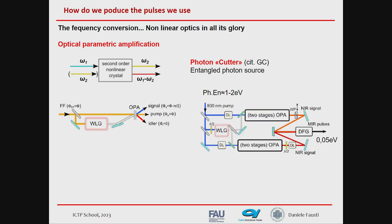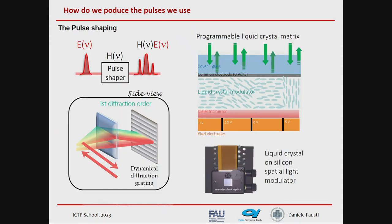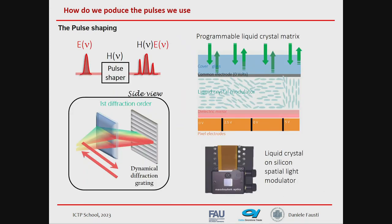Depending on what frequencies we want to produce, we need to design non-linear processes in cascades, going from one given starting frequency to produce all the desired spectral components. This is the conceptual design, and these are effectively real experiments in the lab, where we produce cascades of non-linear processes. We use a lot of non-linear optics, and also a lot of linear optics where we basically shape all the spectral components.